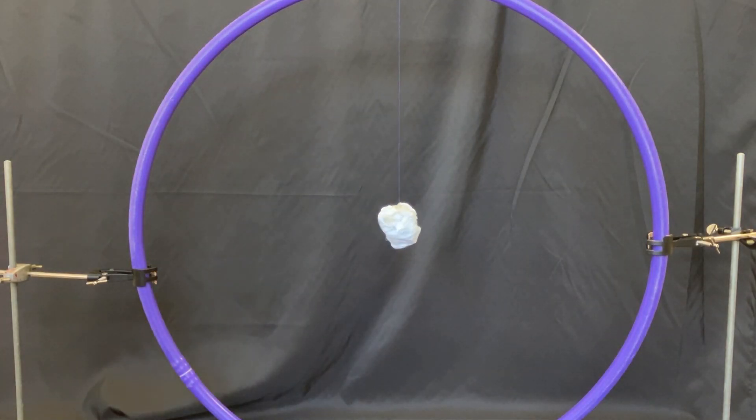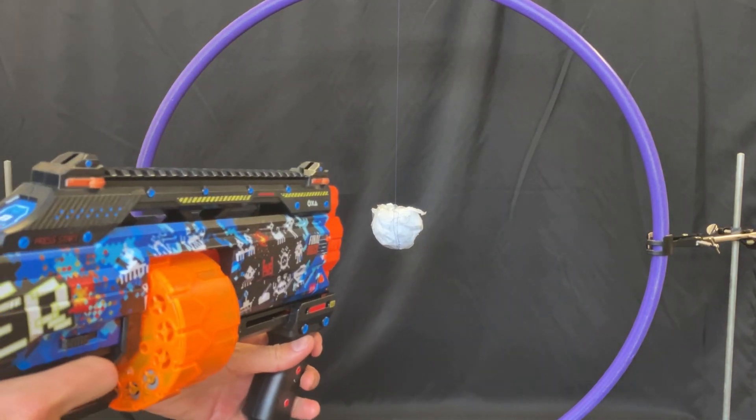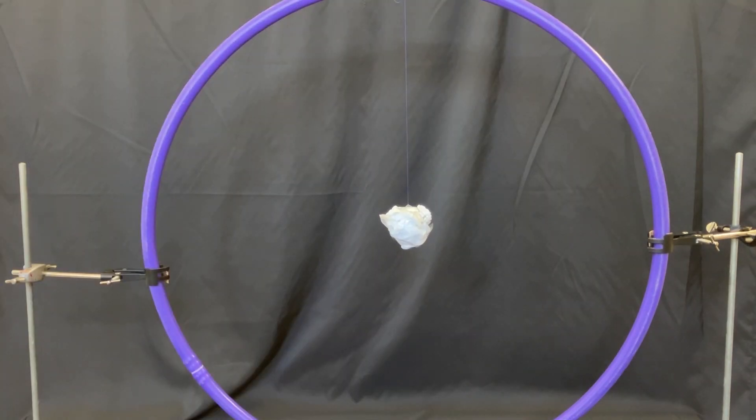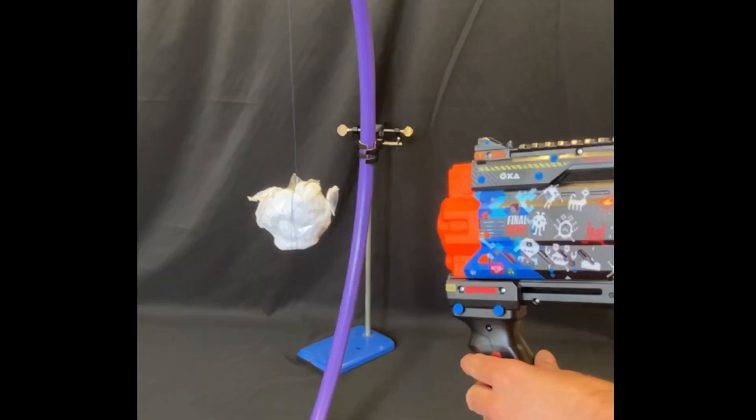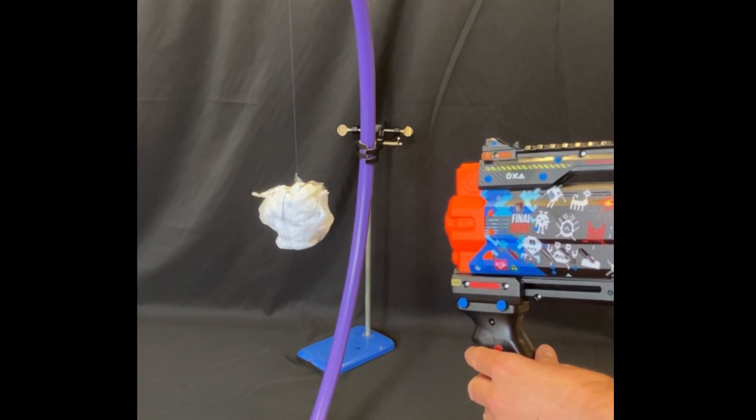Now of course most of the darts will miss the hanging tissue paper and will pass straight through, but occasionally you'll manage to aim a dart right at the tissue paper and it will bounce back. This is much clearer from the side.